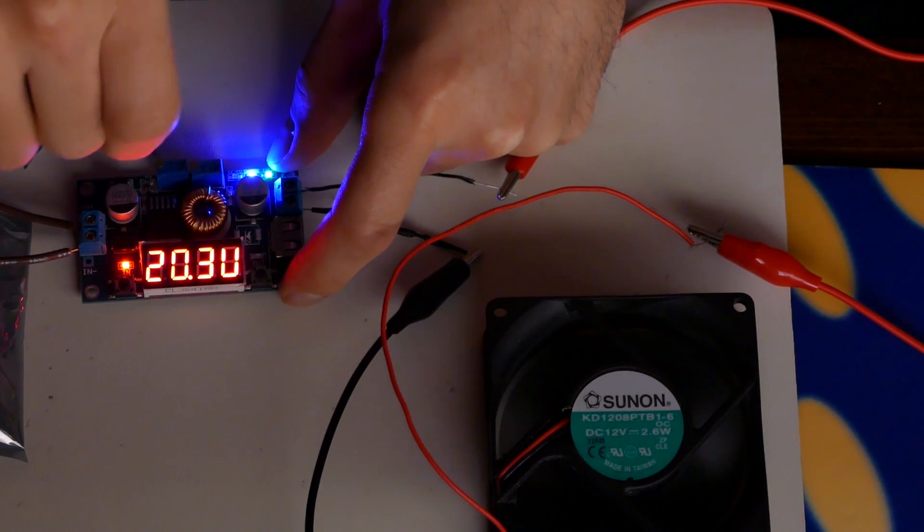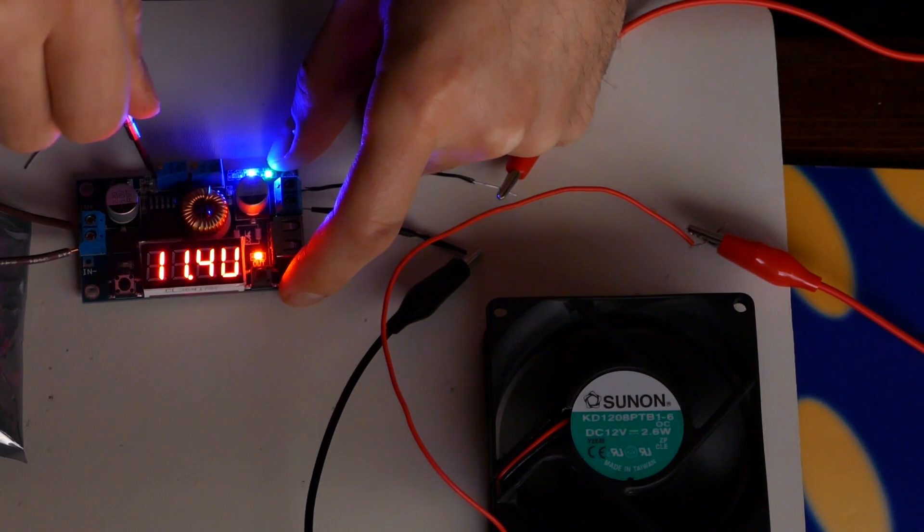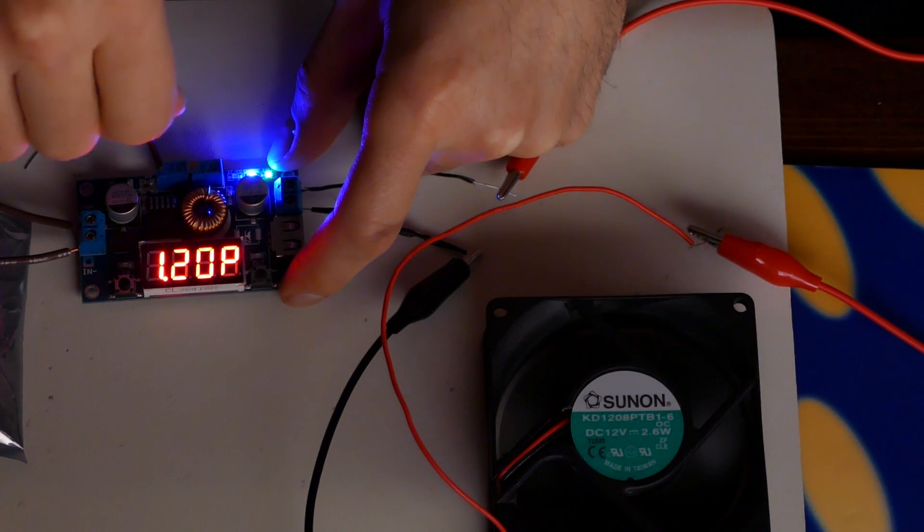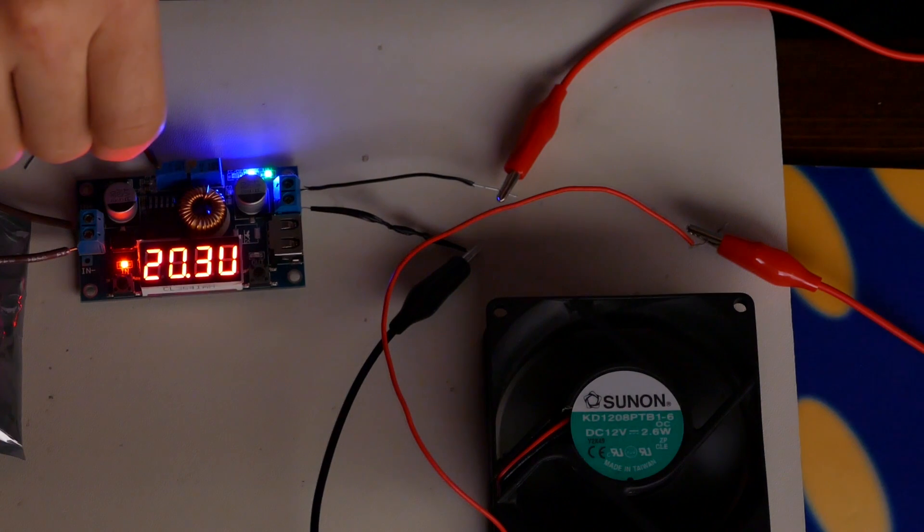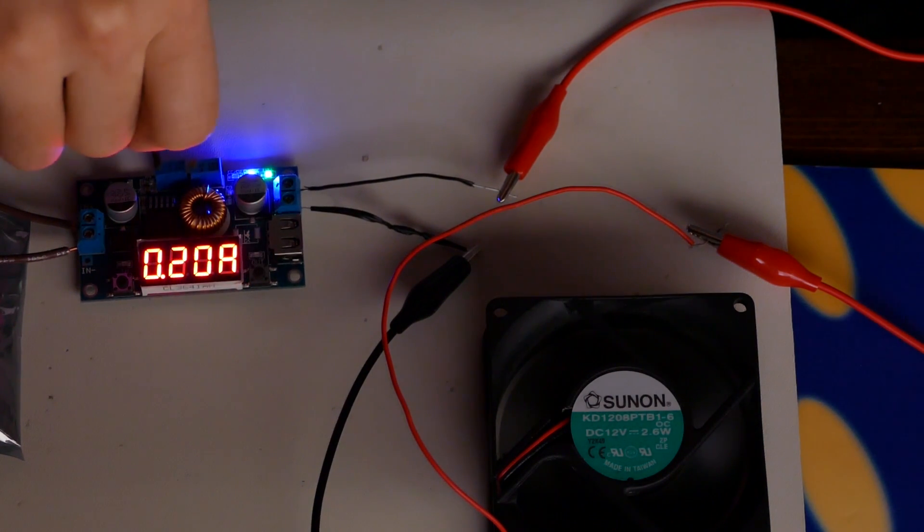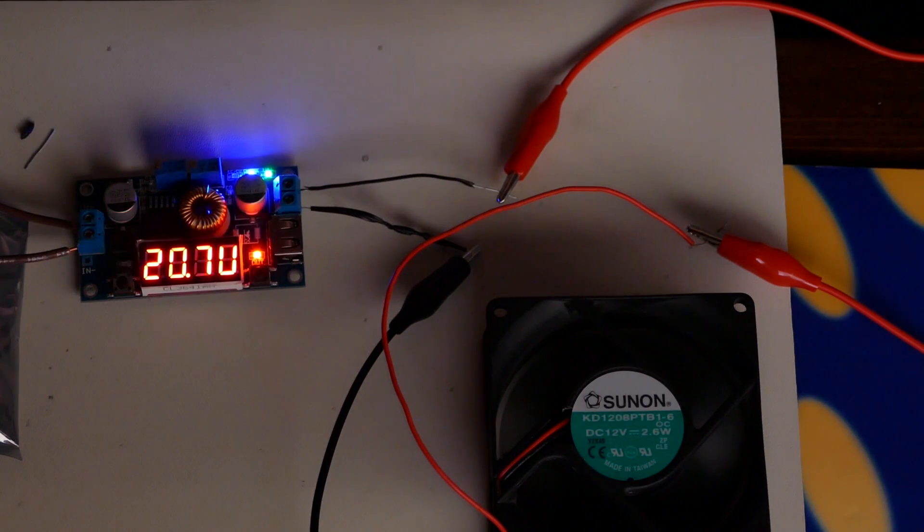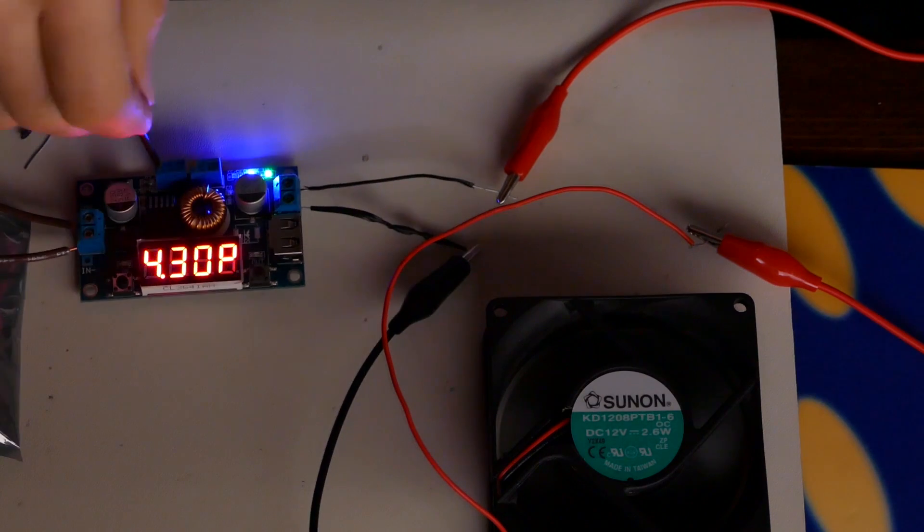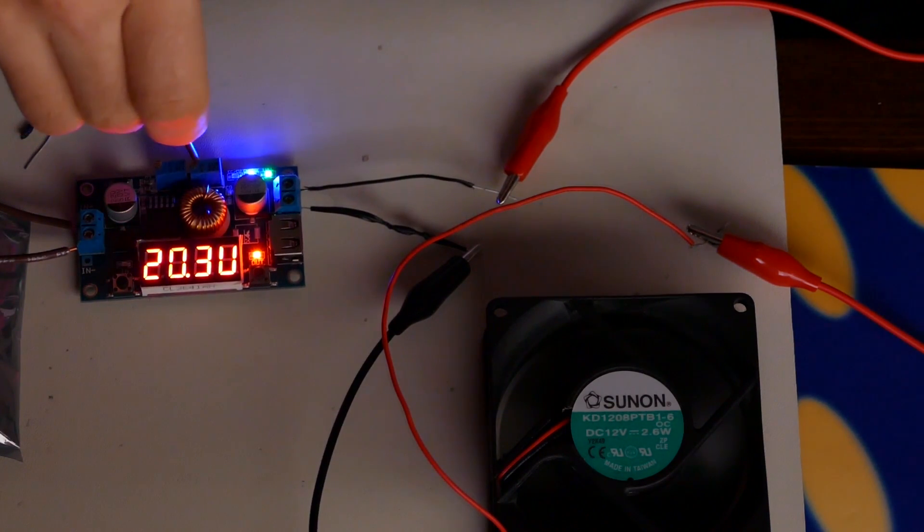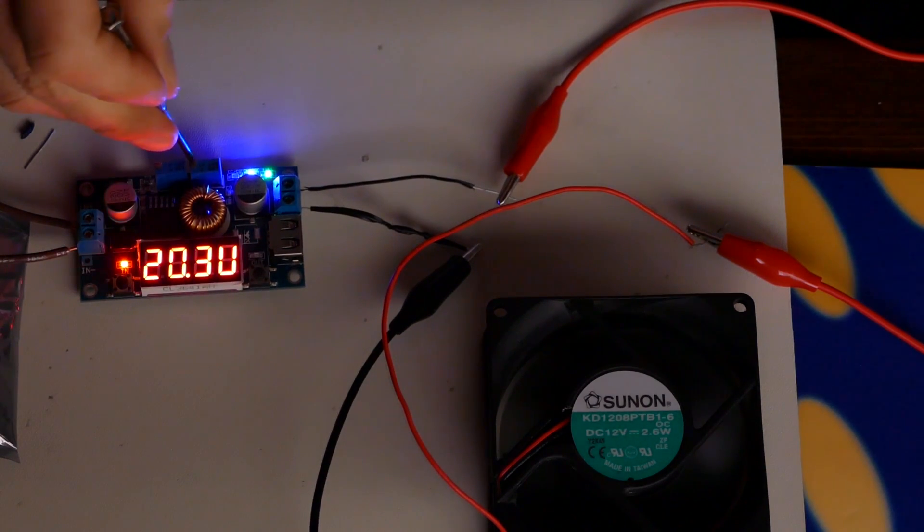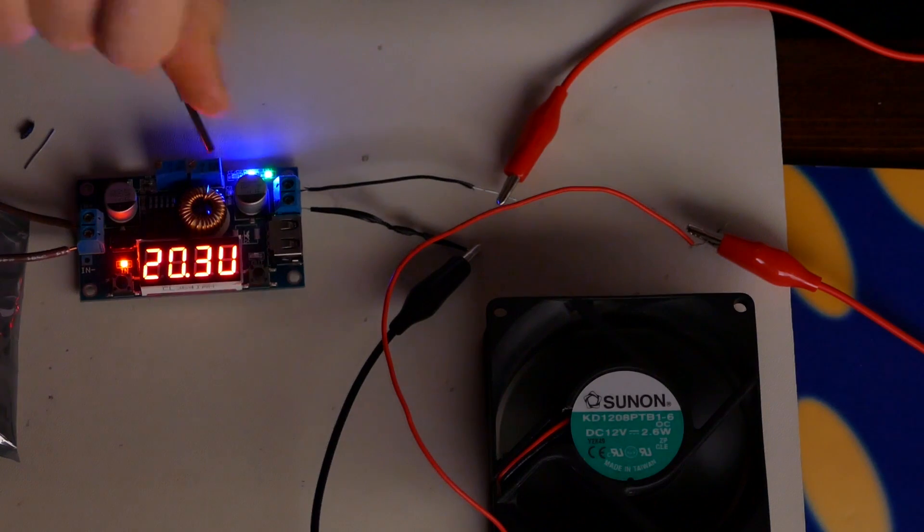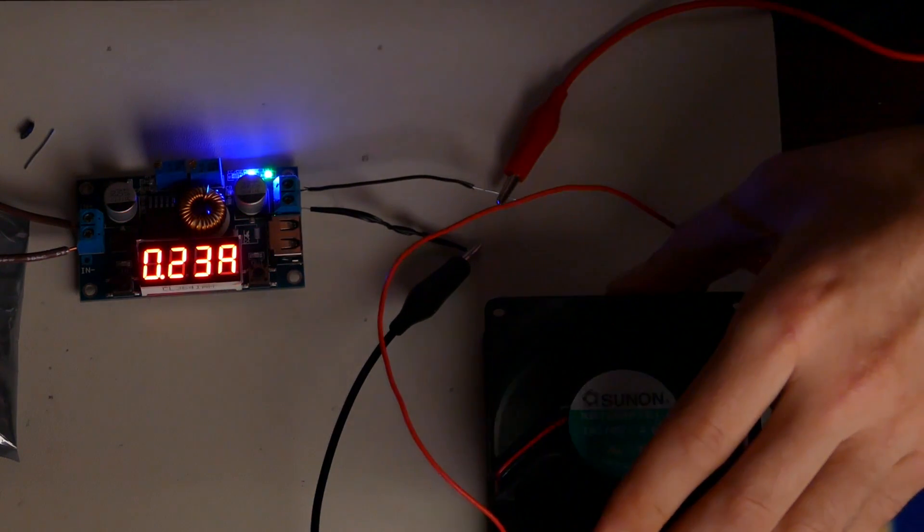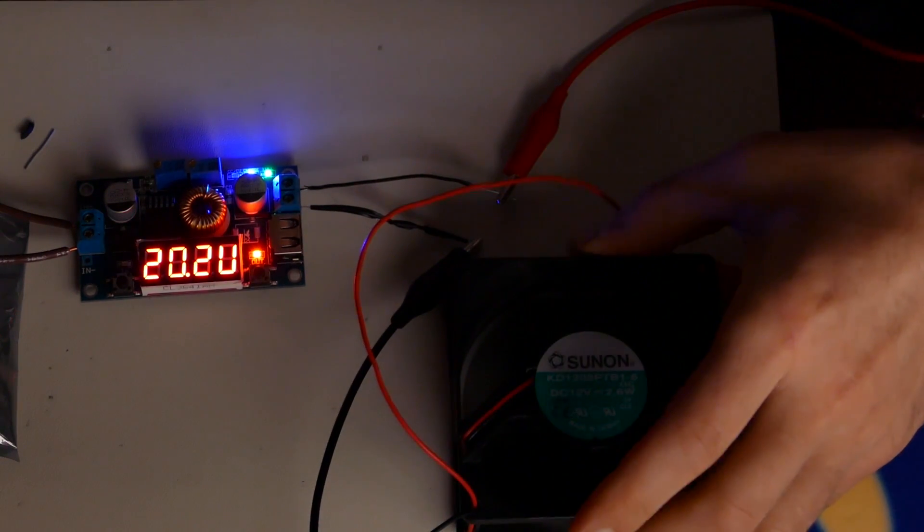That works really well. Now we'll turn the voltage back up. 20.3 in, 20.7 out. And on the current side we have 0.24. Yeah, so that fan is running a little bit faster than it should be.